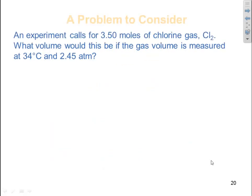Let's try to do a problem. An experiment calls for 3.5 moles of chlorine gas. What volume would it be if the gas volume is measured at 34 degrees C and 2.45 atm? Well, notice we only have one set of conditions here, so obviously we have to use the ideal gas law. This isn't a combined gas law because I'm not going from one set to another set.